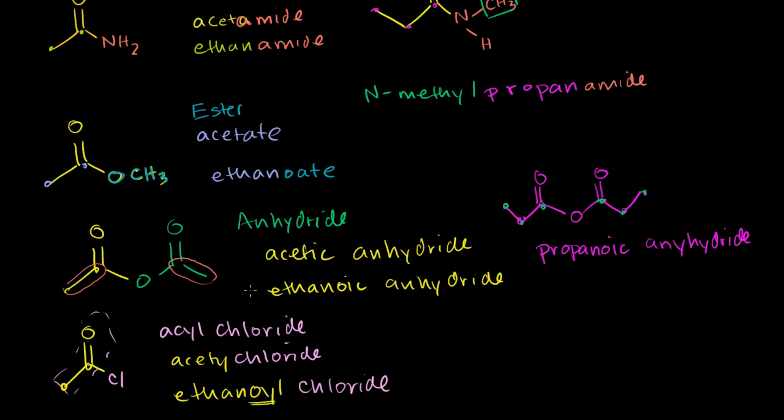So hopefully that gives you at least a good introduction to the differences in structures of all these groups, and an introduction to naming them. In the next video, we'll talk a little bit about the relative stabilities. And then it will give you a good intuition on which direction a reaction might go. So are you more likely to go from an amide to an acyl chloride, or from an acyl chloride to an amide, or anything in between?